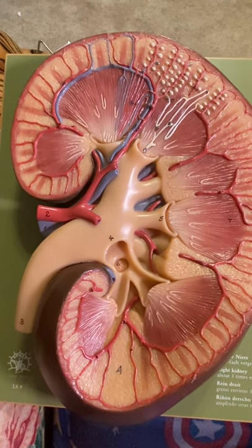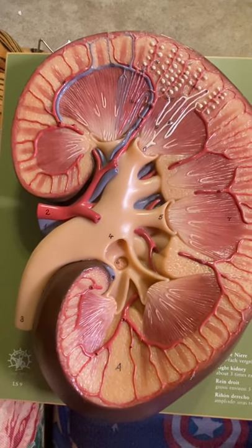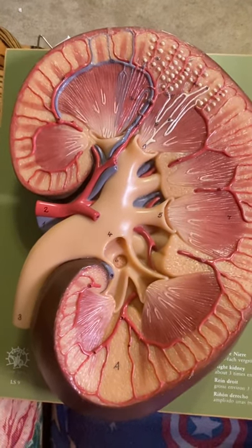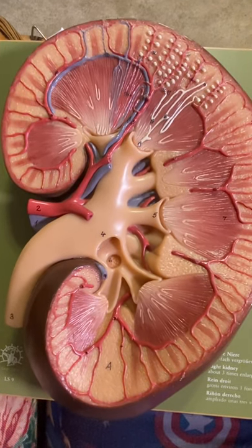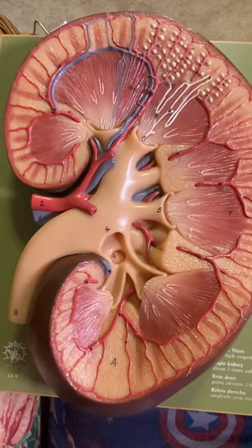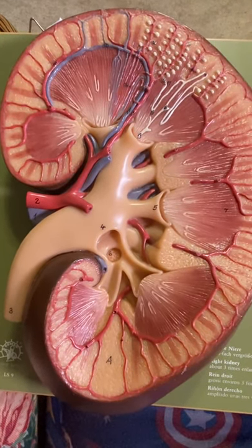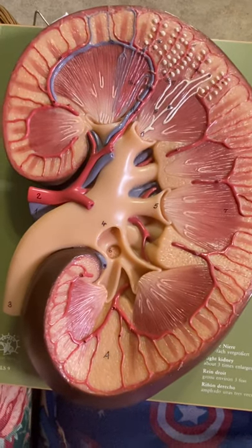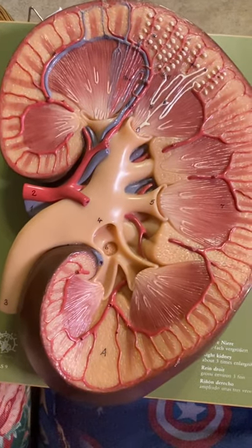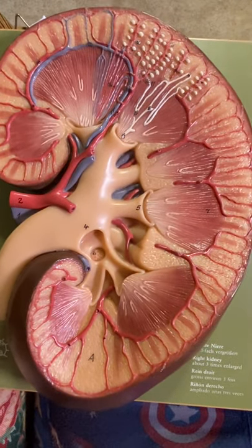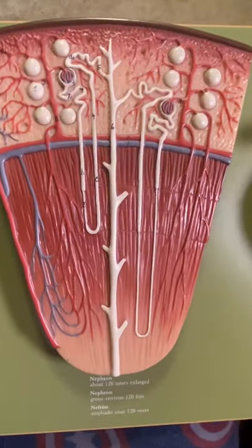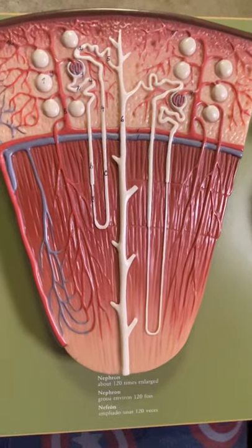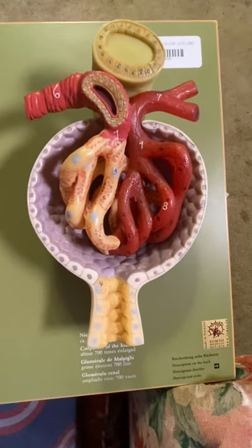We're going to look at our SOMSO renal anatomy model. Here is a cross-section of the kidney as a whole, the nephron, and the renal corpuscle.